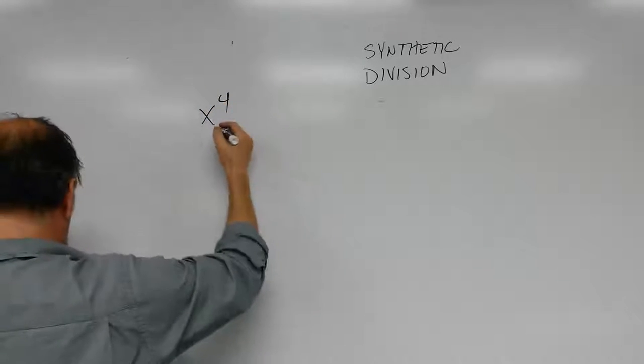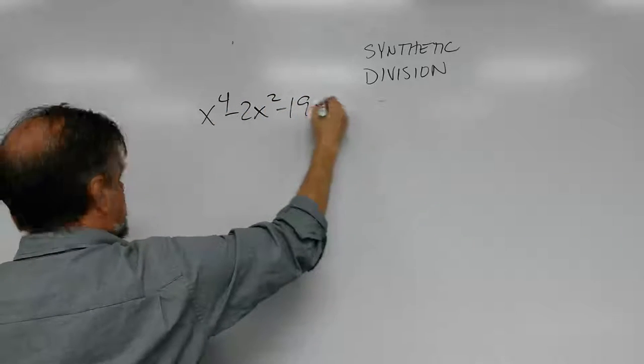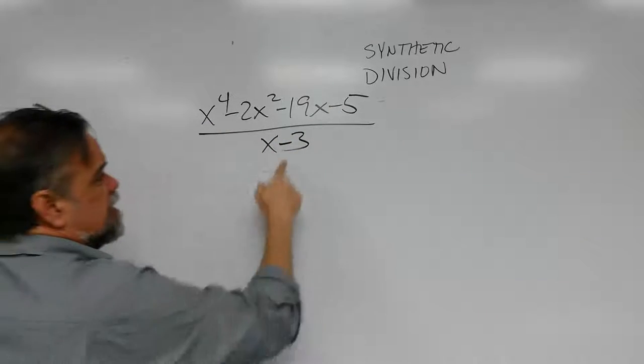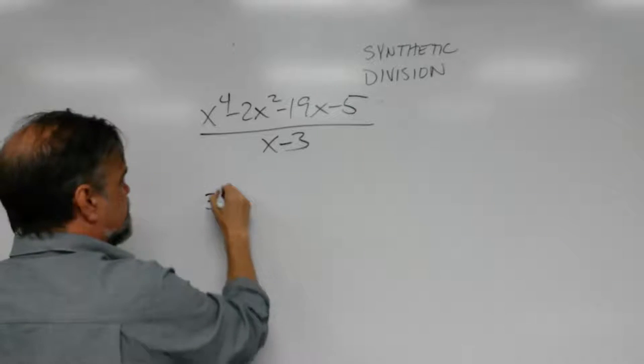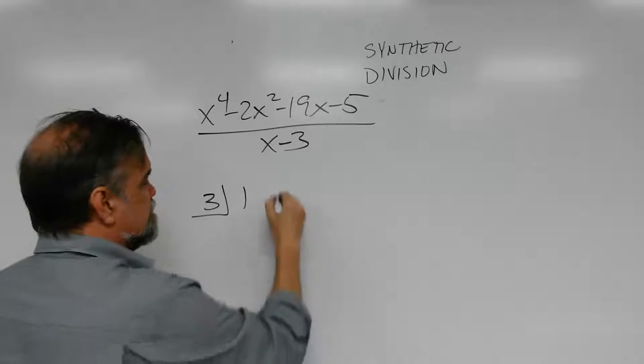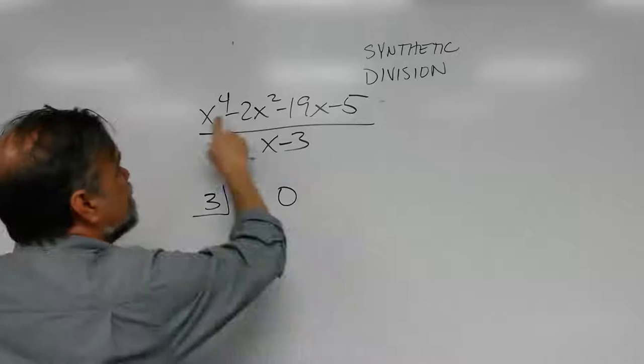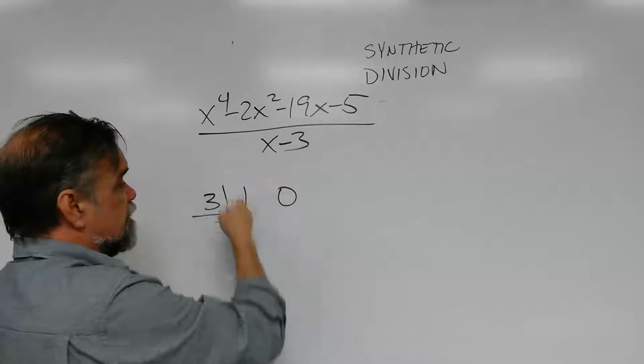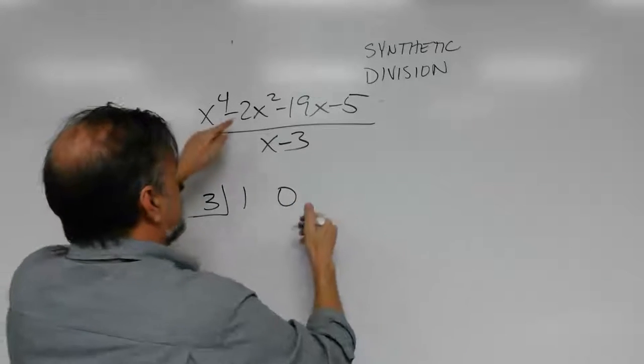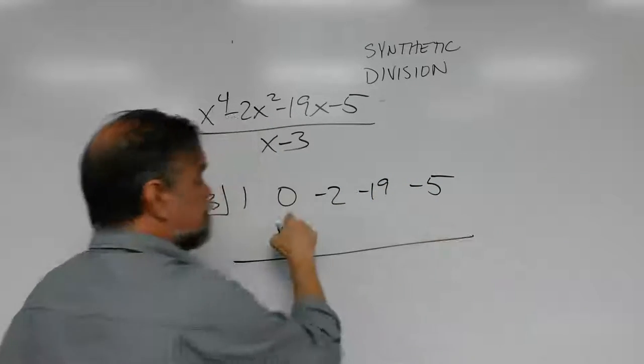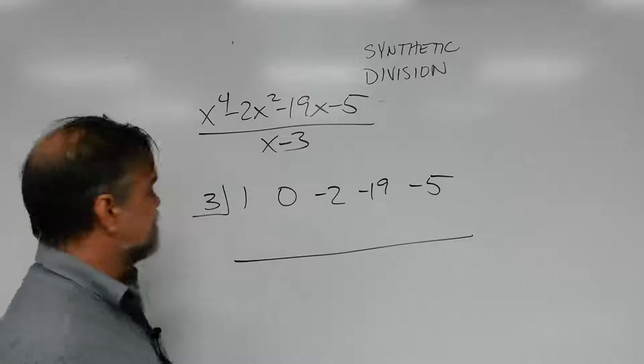Let's do x to the fourth minus 2x squared minus 19x minus 5. And we're going to divide this by x minus 3. So again, minus 3. I'm going to change the sign and say plus 3. Then I'm going to put my coefficients. 1. And the next coefficient is 0. Why 0? Well, that's for my x cubed. Place value is very important. So I have my x to the fourth, x cubed, then x squared. That's going to be negative 2. Then x, that's negative 19. Then negative 5. If you don't put the 0 there, it's not going to work. So make sure you do it.